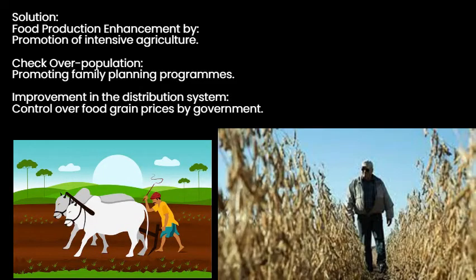The solution for the food crisis is food production enhancement by promotion of intensive agriculture. Check overpopulation by spreading awareness among people to control population. Improvement in the distribution system by control over food grain prices by government.